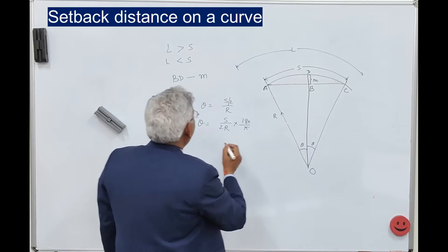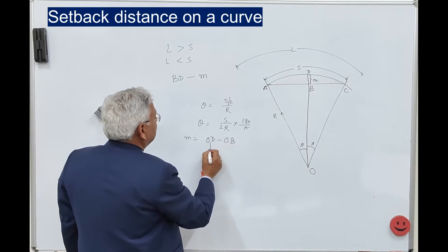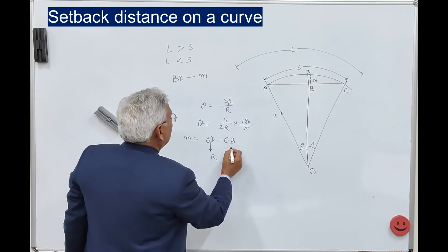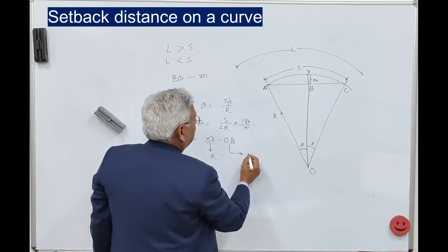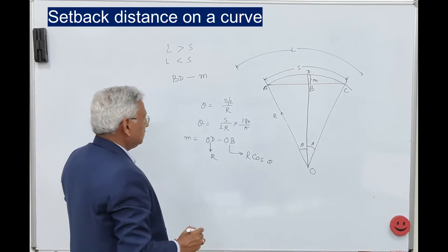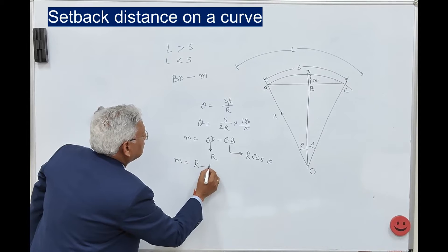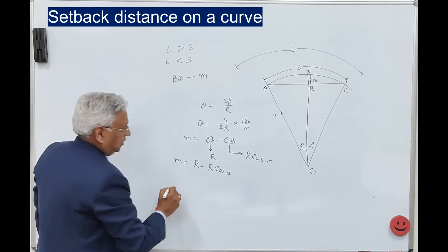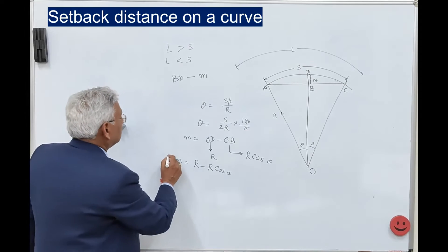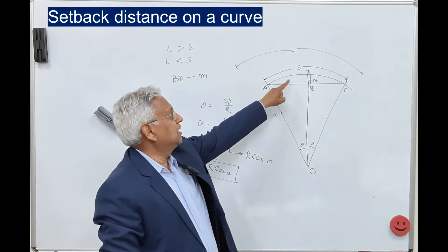So m equals od minus ob, where od is r. From the triangle, for a single lane road, m equals r minus r·cos(θ), where theta is s/(2r) × (180/π) in degrees. This formula applies when the side distance is less than the length of the curve.